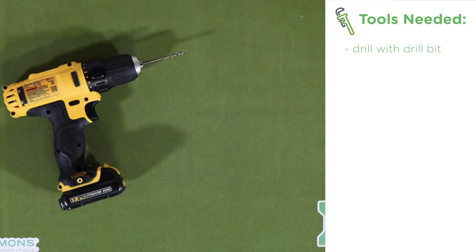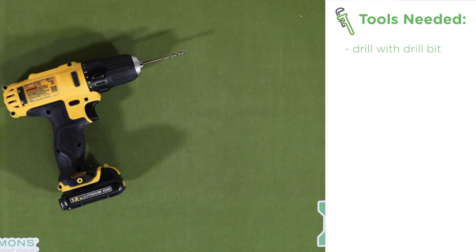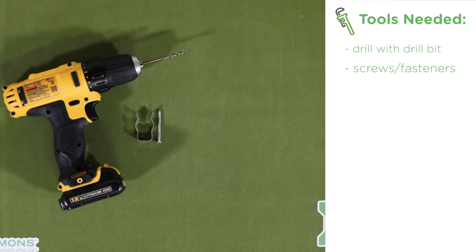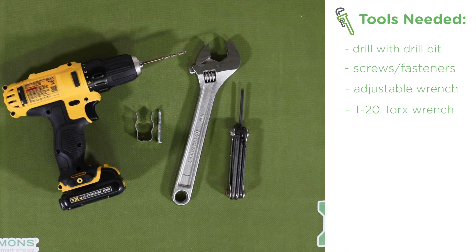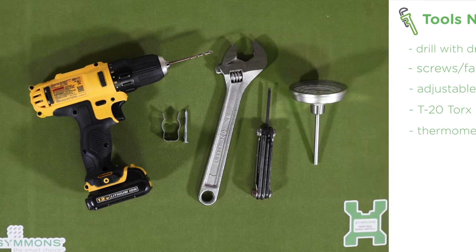A drill with a bit that's appropriate for drilling into the material where the valve will be mounted, screws or fasteners to secure the valve mounting bracket, an adjustable wrench, a T20 Torx wrench, sometimes referred to as a star screwdriver, and a thermometer, either dial type or digital.